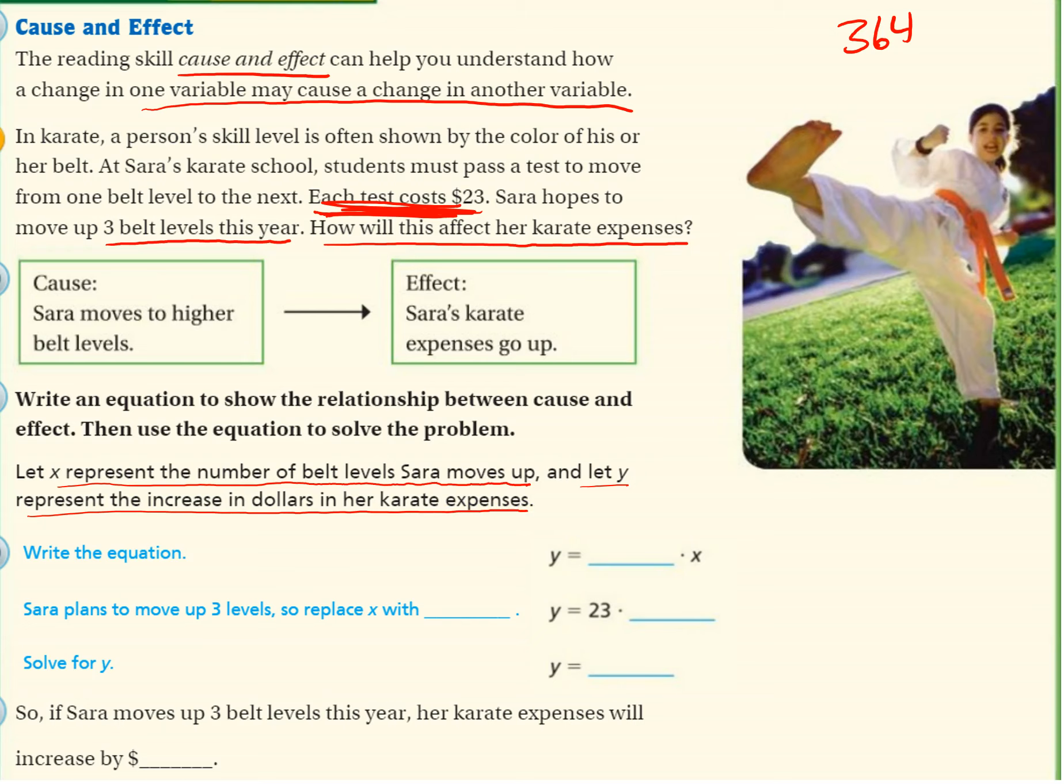So it's going to be 23 times however many belt levels she wants to move up. Sarah plans to move up 3 levels, so we're going to replace X with a 3. Y equals 23 times X. And then we're going to solve. So 23 times 3. 3 times 3 is 9. 3 times 2 is 6. So it will increase her cost by $69.